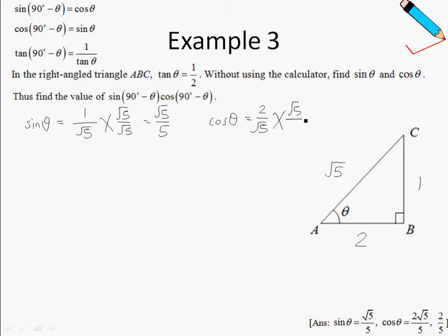So similarly, let us just rationalize this denominator, and we'll get 2 root 5 over 5.